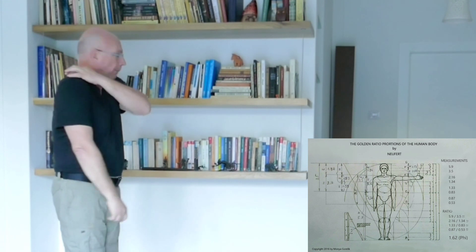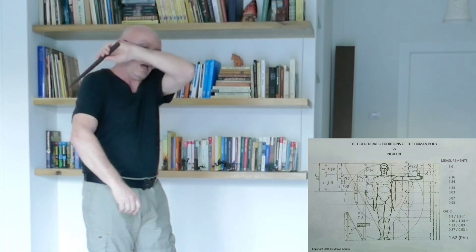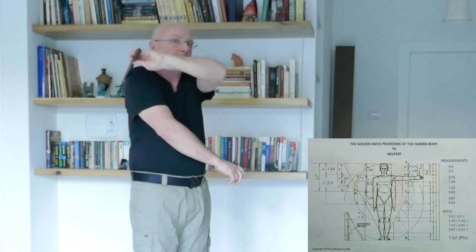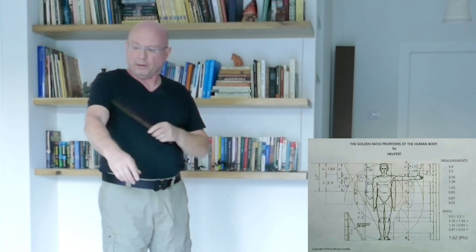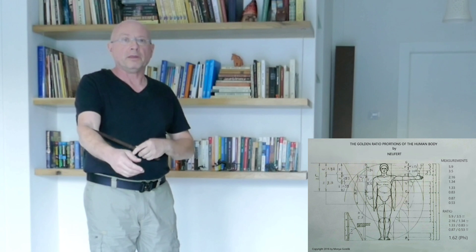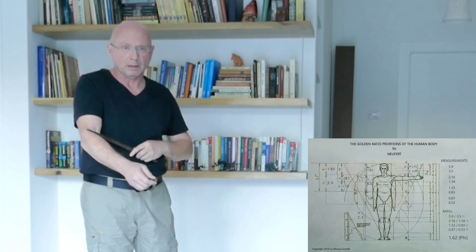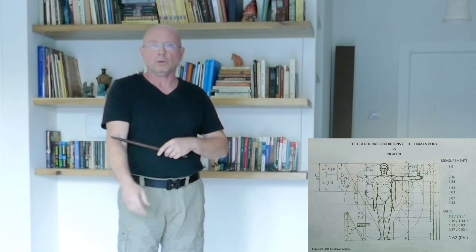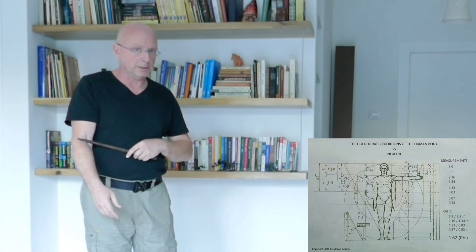If, for example, we see our arm with the shoulder blade, the elbow will divide the arm in the ratio of Golden Ratio Proportions. It means something about 1.62.